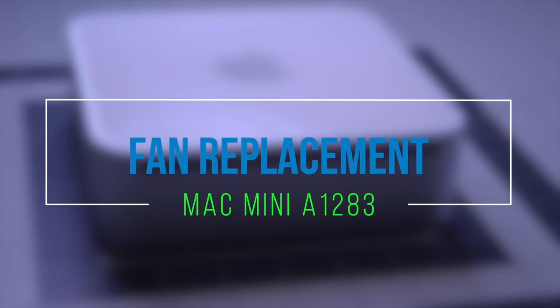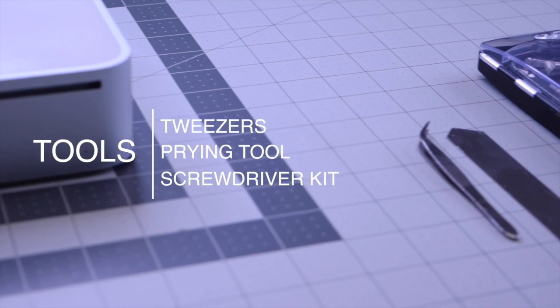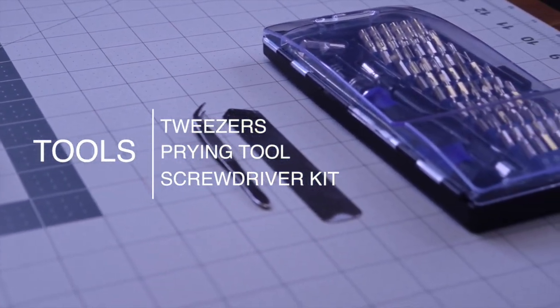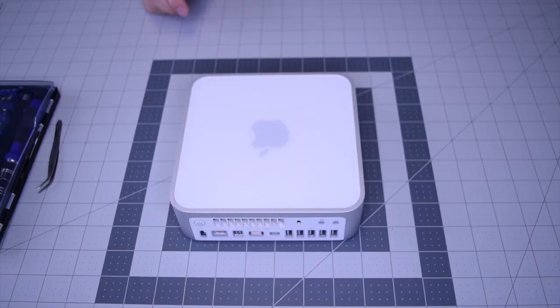System fan replacement for Mac mini 1283. The tools we're going to need are tweezers, a prying tool, and a screwdriver kit with a flathead and a Phillips head screwdriver.